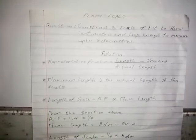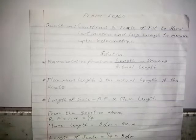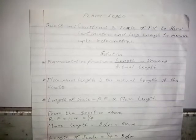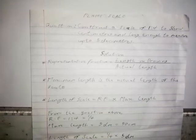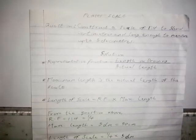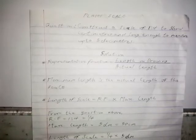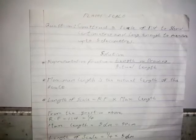Before we proceed, you need to know that a plane scale is used to show a maximum of two units — for example, meters and decimeters, or decimeters and centimeters, or centimeters and millimeters. So a plane scale shows a maximum of two units of linear measurement.